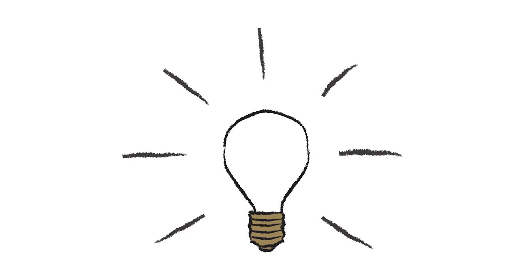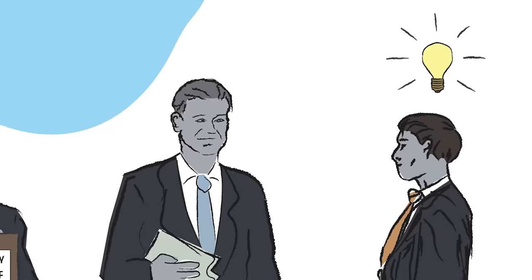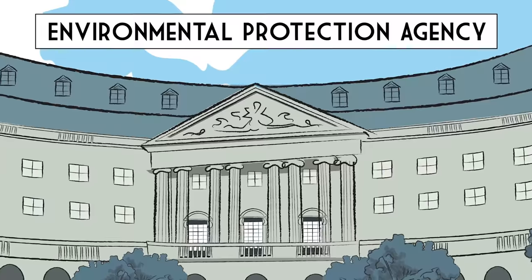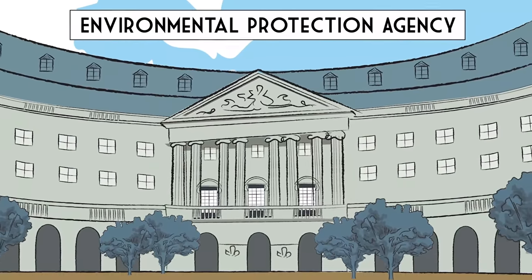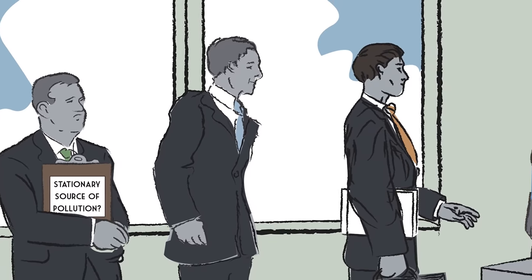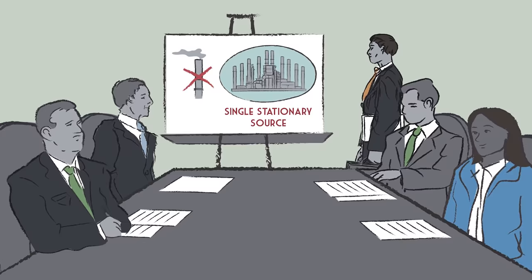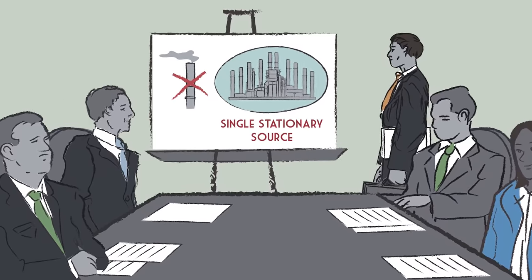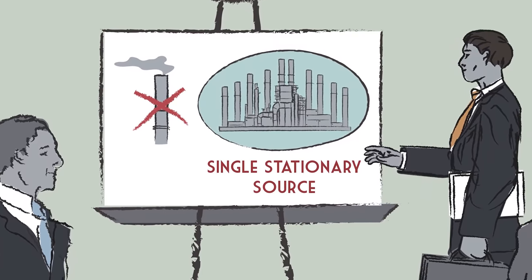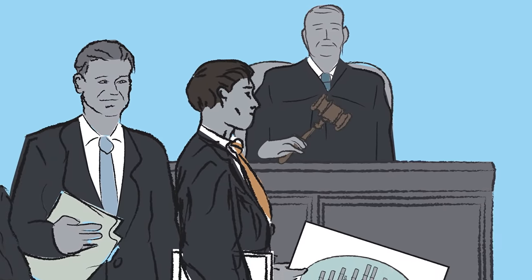But if you count the stationary source as the entire plant, then you're golden, because the plant as a whole is emitting less after the plan than before. The Environmental Protection Agency went back and forth several times through several different presidential administrations about whether it could interpret the statutory term 'stationary source' to mean the whole factory or each individual smokestack. They finally settled on treating the factory as one source — drawing an imaginary bubble over the entire factory and counting that as a single stationary source. That was challenged in court.